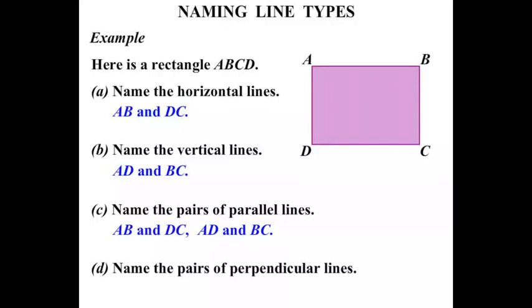Name the pairs of perpendicular lines. Perpendicular means they meet at right angles at 90 degrees. Well, let's consider this top line firstly, the AB line, and this line here. Notice that that angle is 90 degrees. So that line there AB and AD, they are perpendicular.